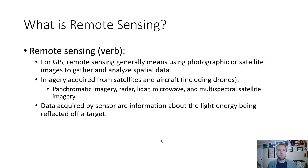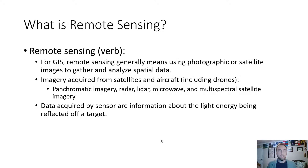For GIS, remote sensing generally means using photographic or satellite images to gather and analyze spatial data. Images acquired from satellites and aircraft including drones are part of a process broadly called remote sensing. Remote sensing allows the collection of panchromatic imagery, the use of radar, lidar, microwave radiation, and multi-spectral satellite imagery — all various tools and processes to collect information about phenomena or objects at a distance.